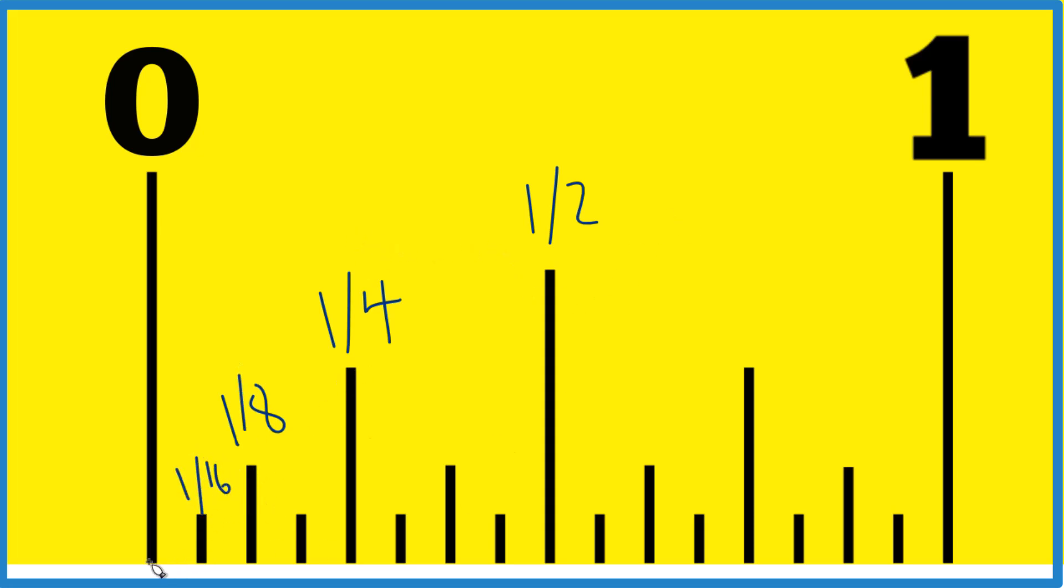So let's find three-eighths. Here's one-eighth, two-eighths, three-eighths. So right there's three-eighths. We want to know what's halfway between three-eighths and one-half. So that's right here. So this is what we want to find.